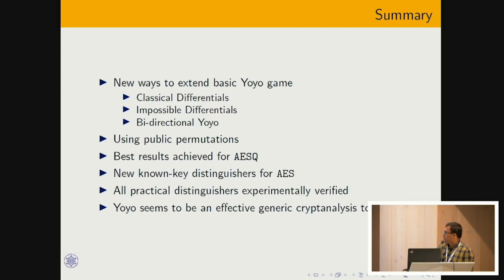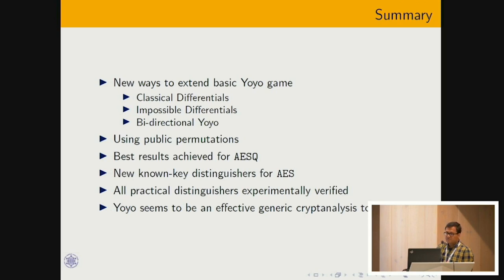In summary, we have shown new ways to extend the yoyo game: composing classical differentials and impossible differentials with the yoyo game, and composing two yoyo games for the bi-directional yoyo game. Our technique can be used for public permutations, and using these techniques we have achieved the best results so far for ASK and new non-key distinguishers for AES. All practical distinguishers reported have been practically verified.